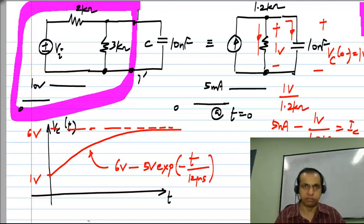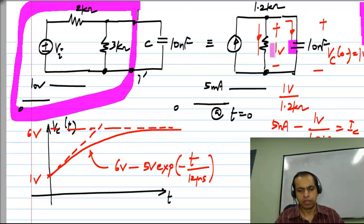So that is the expression for it and this slope again, you can calculate from the initial current flowing through the capacitor, because the slope of capacitor voltage is related to its current or you can find it out by differentiating this expression.